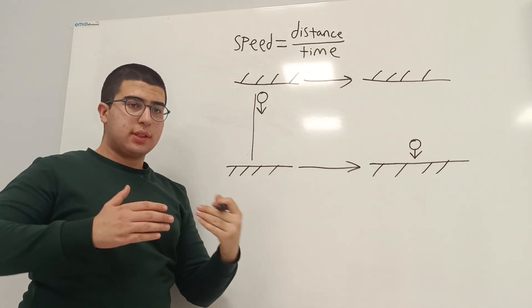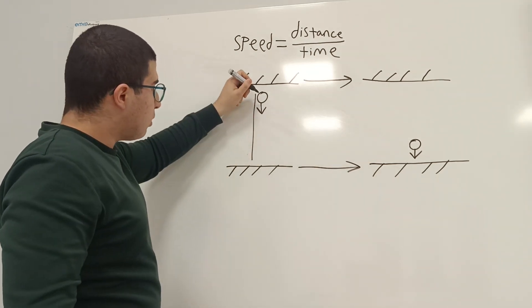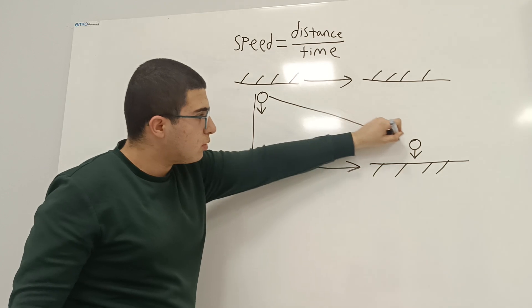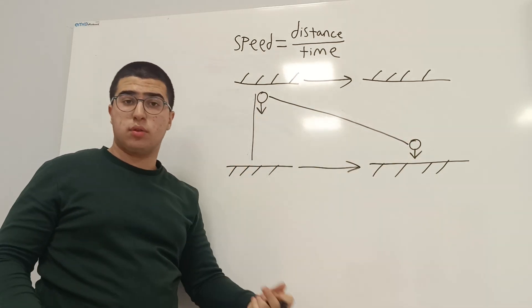But relative to us, we see that because the spaceship is moving, this clock has moved from here to here. So it covered a greater distance in the same amount of time.